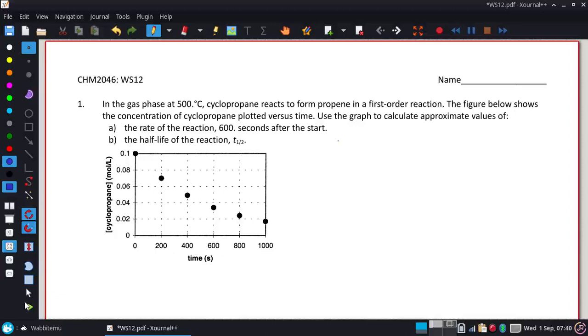Use the graph to calculate an approximate value of A, the rate of reaction at 600 seconds after the start. So we are looking right there, and we want to get the rate.